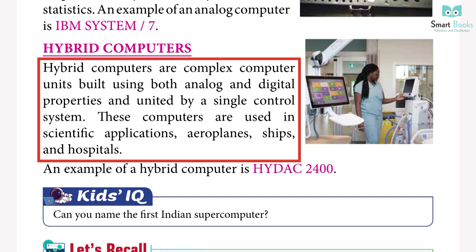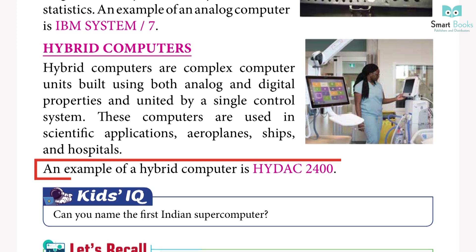Hybrid computers: hybrid computers are complex computer units built using both analog and digital properties, united by a single control system. These computers are used in scientific applications, aeroplanes, ships, and hospitals. An example of a hybrid computer is the HiTec 2400.